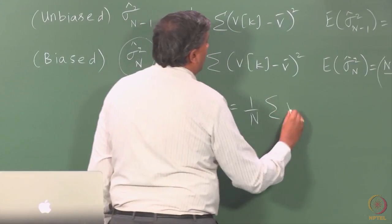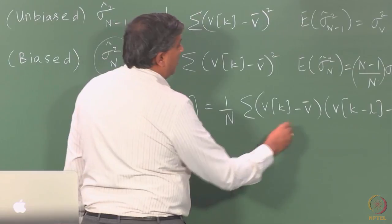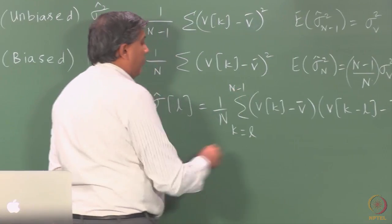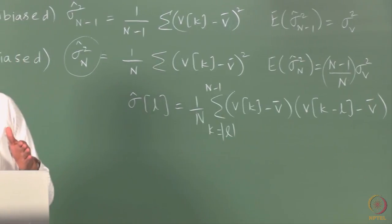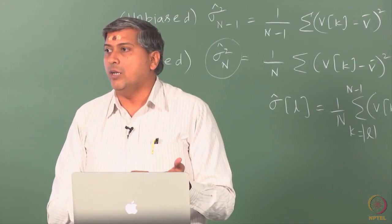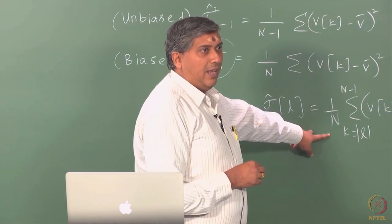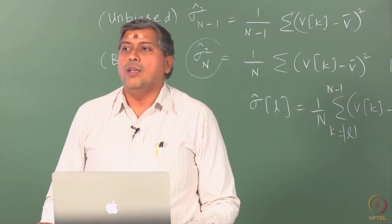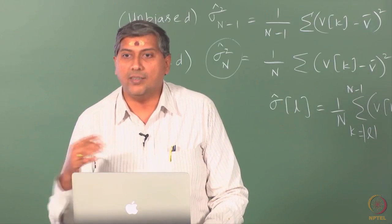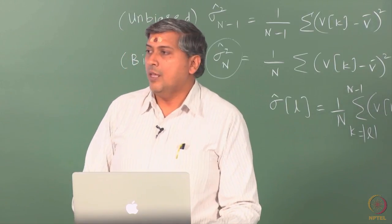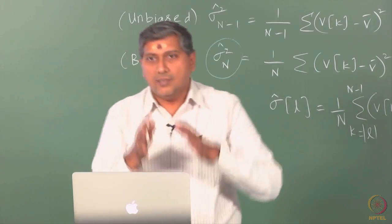The sample autocovariance is σ̂(l) = (1/n) Σ (vk − v̄)(vk−l − v̄), where k runs from l to n−1, giving n−|l| terms in the summation. Intuitively, an unbiased estimate would use a factor of 1/(n−|l|), but we still work with 1/n, knowing this gives a biased estimate. Why? One reason is that the 1/n estimator has lower variance than the unbiased one.